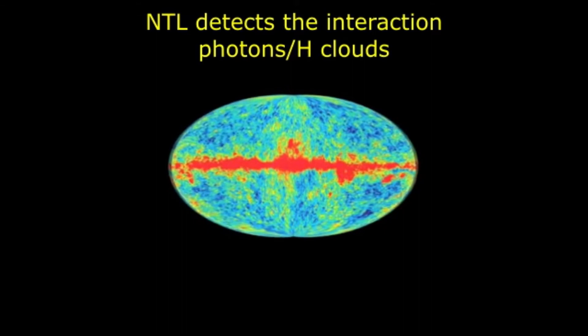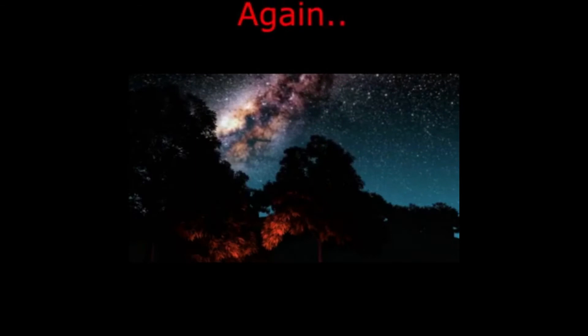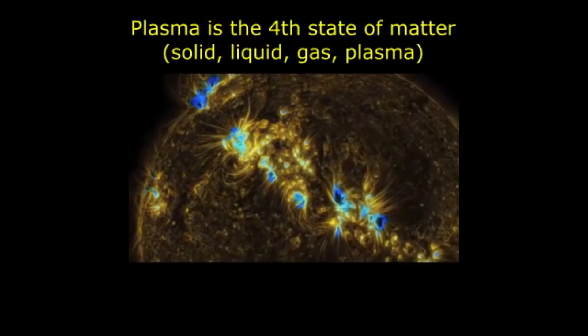In this sense, the New Tired Light theory detects the interaction of photons of light with hydrogen clouds, whose redshifts are quantized throughout space. If the Big Bang theory were correct, the initial explosion would have distributed galaxies in concentric shells centered on Earth. The plasma is ionized gas permeating the universe — the most common phase in the universe, defined as the fourth state of matter after solid, liquid, and gas.